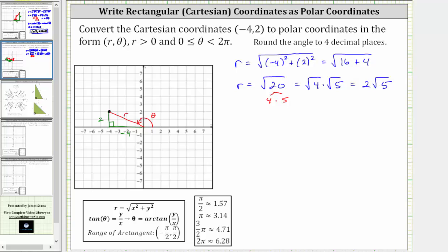And now let's determine the angle theta, where again theta is equal to arctangent of y divided by x, in our case, two divided by negative four, which simplifies to arctangent negative one half. And now we need to go to the calculator.